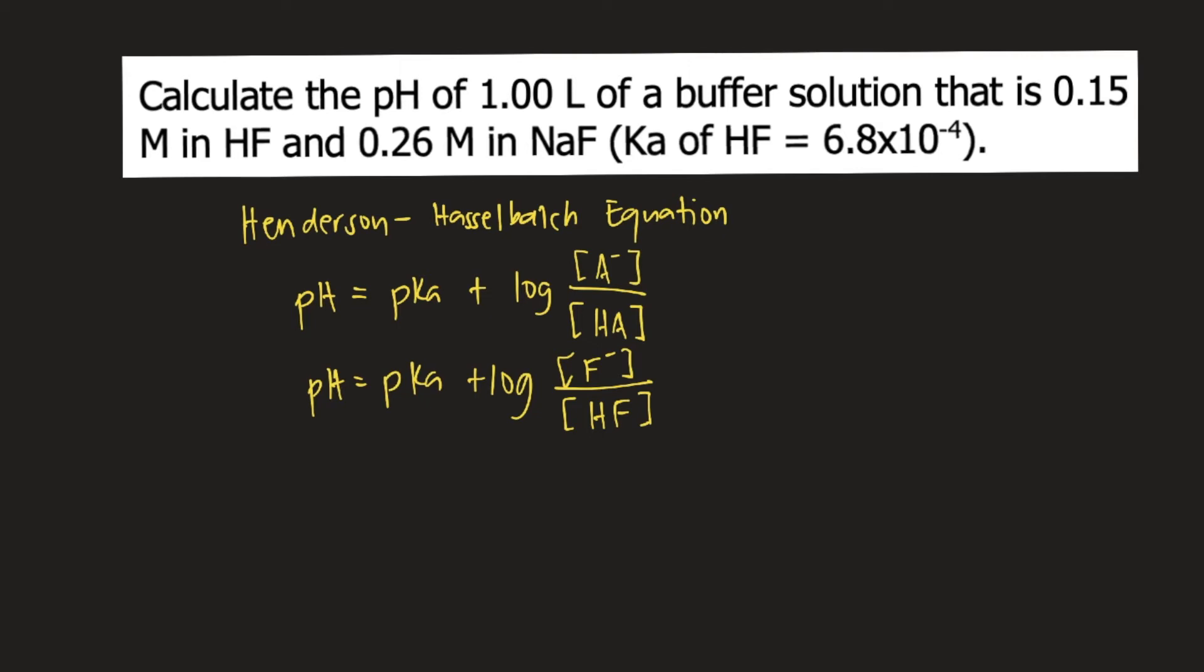Now, we also know that pKa is equal to the negative log of Ka. So we can plug this into the equation. Our equation becomes pH equals negative log of Ka plus log of the concentration of F minus divided by the concentration of HF.